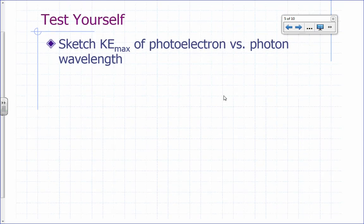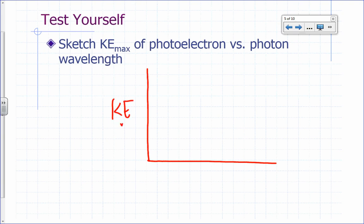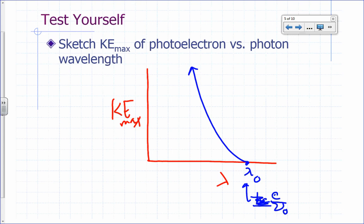If you were to plot kinetic energy versus wavelength instead, you'd get a curve rather than a straight line. There would be a maximum wavelength — a threshold wavelength equal to c over nu-naught. You'd have higher kinetic energy for shorter wavelengths, which correspond to higher frequency and higher electron kinetic energy.